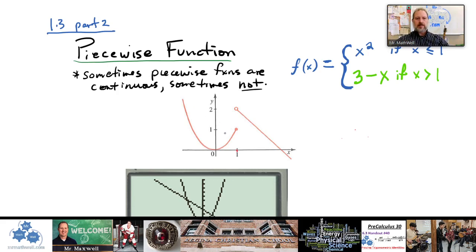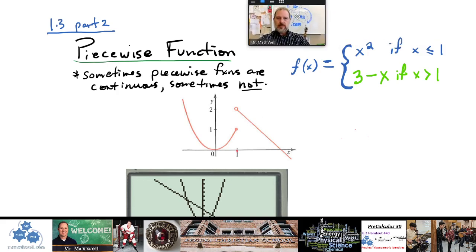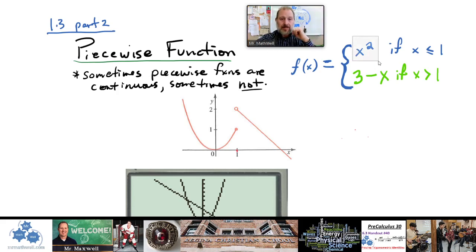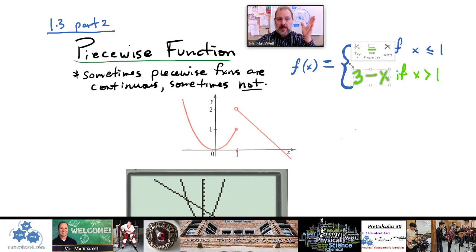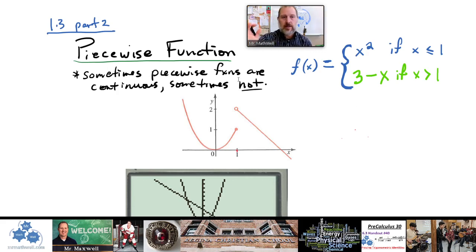There's an example right here in the middle of the screen of a piecewise function. You can see that f(x) is made up of two parts or two pieces: there's an x² piece and a (3 − x) piece. So one function is made up of different pieces — that's why it's called a piecewise function.